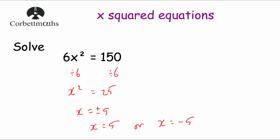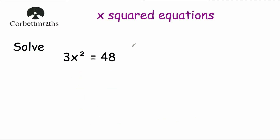Our next question says: solve 3x squared equals 48. We want to get x on its own, so let's get rid of the multiply by 3 first — divide both sides by 3. 3x squared divided by 3 gives us x squared, and 48 divided by 3 equals 16. So x squared equals 16.